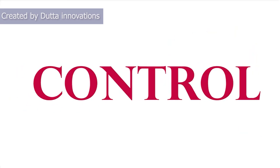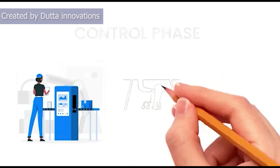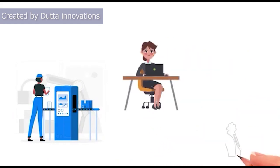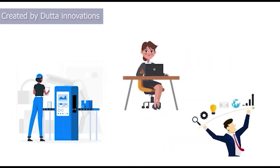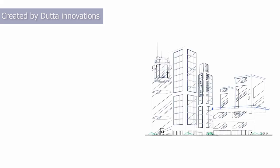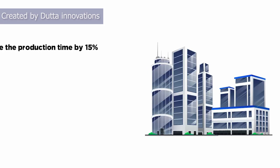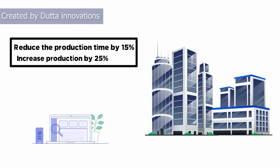Finally, in the control phase, Sophia makes regular adjustments to control new processes and future performance based on the changes made. The company was able to reduce the production time by 15% and increase production by 25% with a higher quality of output.